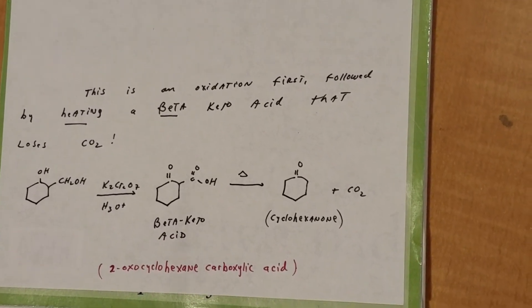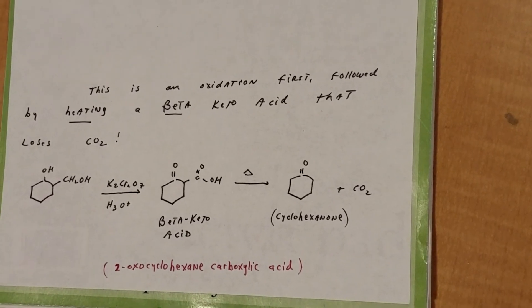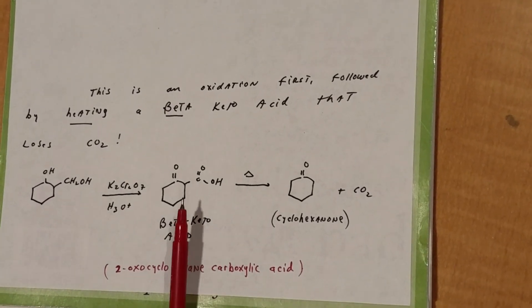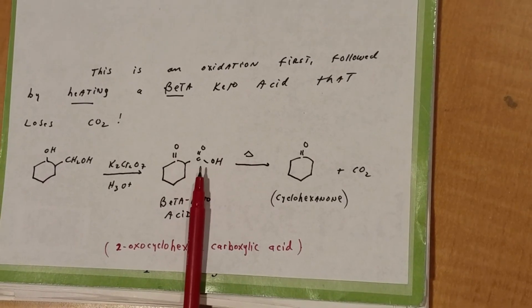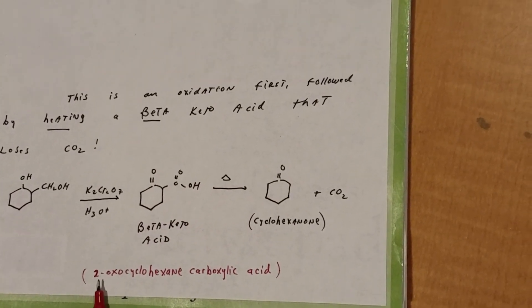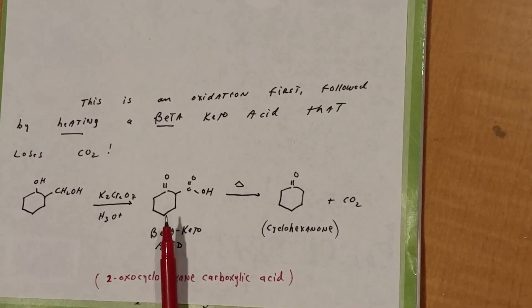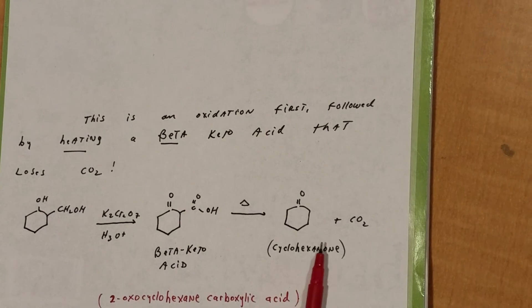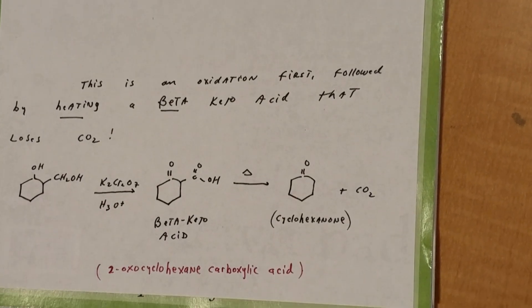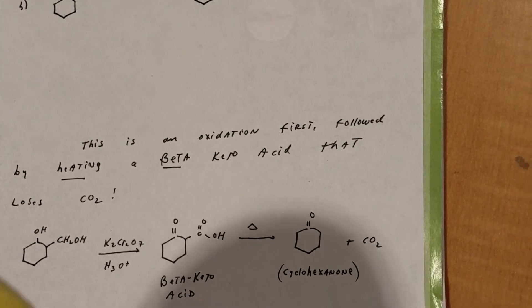But this isn't any old carboxylic acid. This is called a beta-keto acid. And any time you heat a beta-keto acid, you lose CO2. And that's the key kicker in this problem. So when you heated this up, which is, by the way, known by IUPAC name of 2-oxo-cyclohexane carboxylic acid, you heat it up to cyclohexanone and CO2. So the correct answer would be choice letter B.